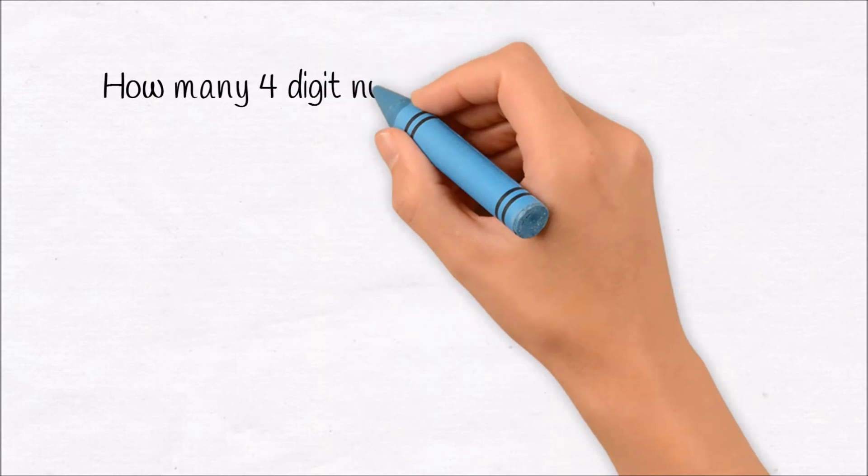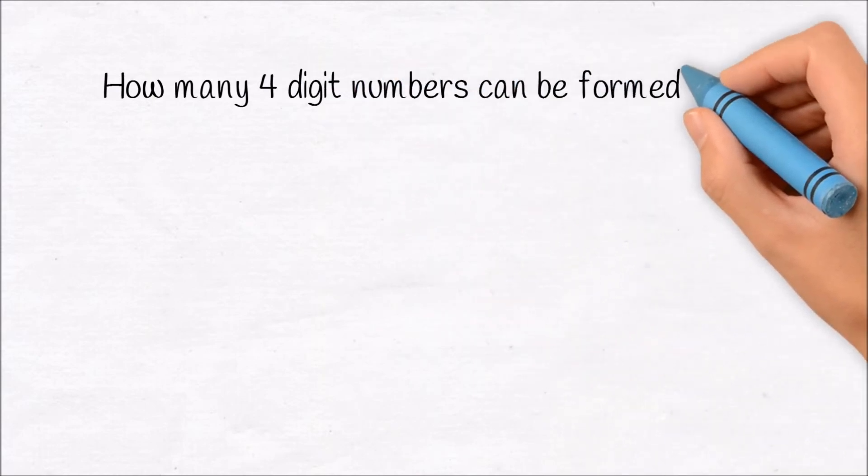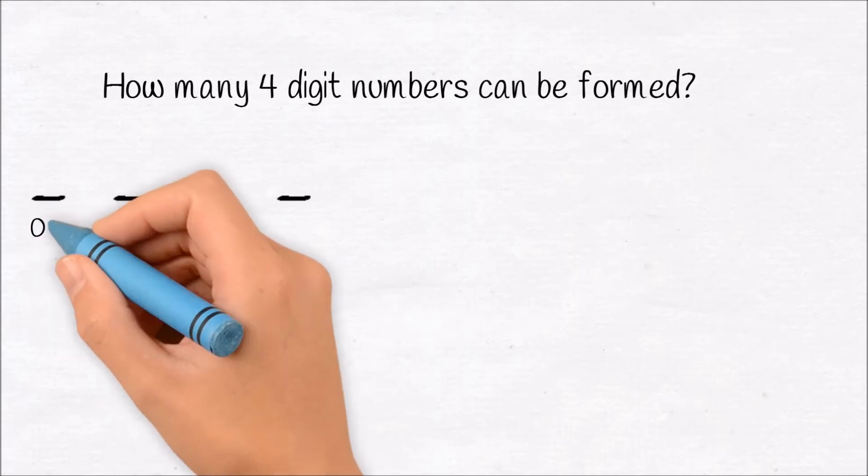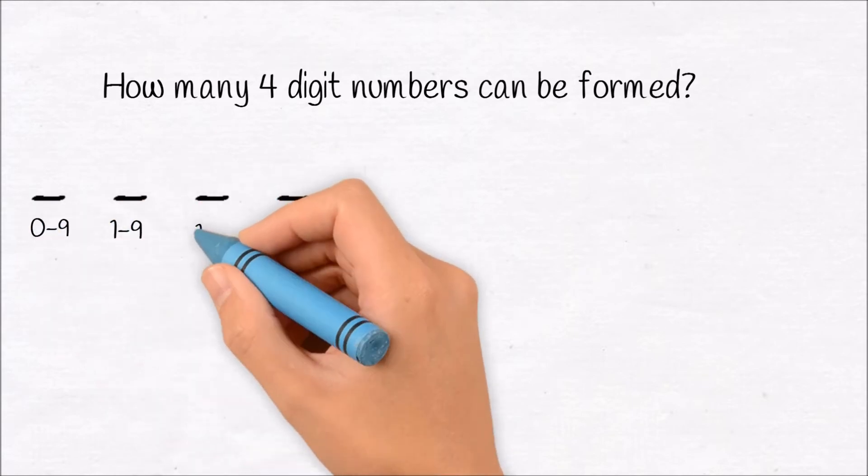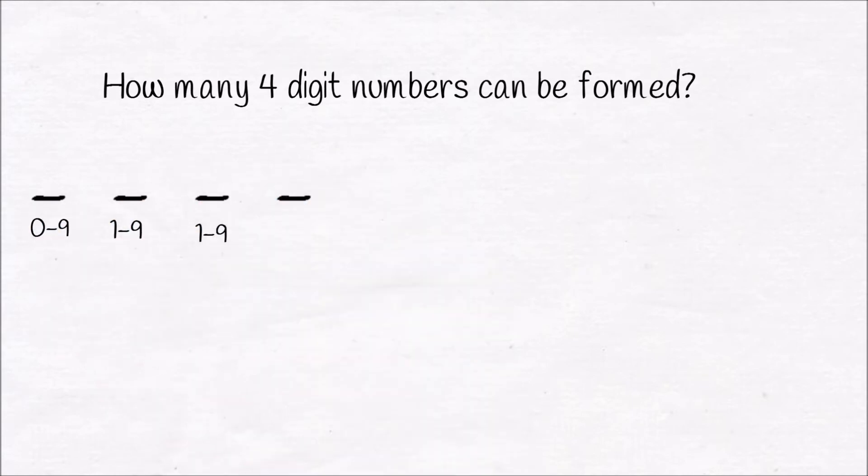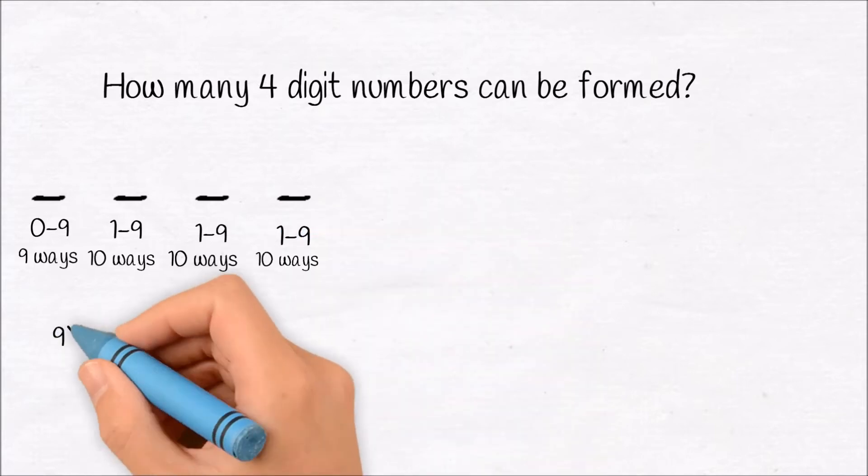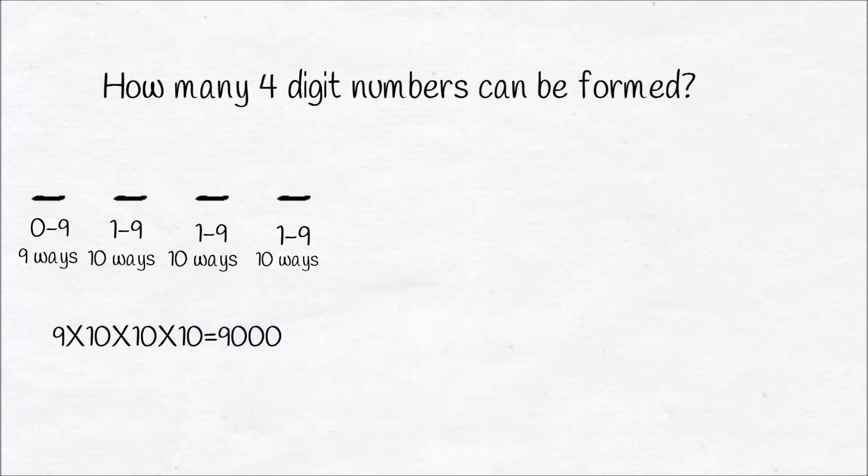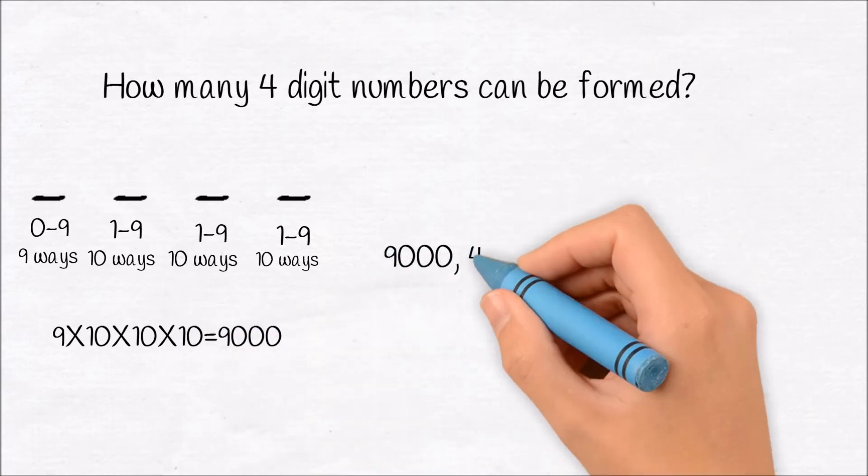Let's solve one more problem. How many 4-digit numbers can be formed? The 1000th place can be filled in 9 ways. 100th and 10th and unit position can also be filled in 10 different ways. 9 into 10 into 10 into 10, which is 9000. There are 9000 4-digit numbers.